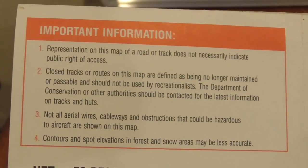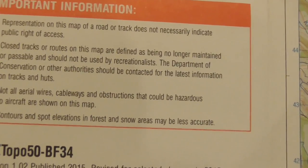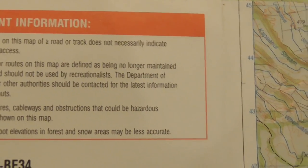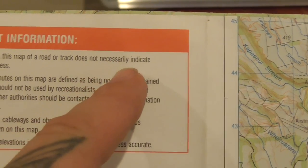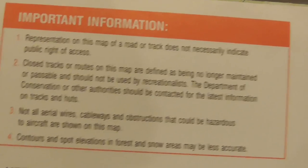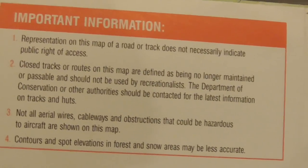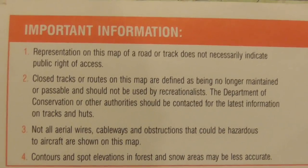Every map has different marginal information — they're not all exactly the same. In this case, we have what's called important information, which generally talks about things like how the map is not one hundred percent accurate. For example, the representation of a road or track does not necessarily indicate public right of access — just because you see a road or an area or a fence doesn't mean you can necessarily go on it, as it might be private land.